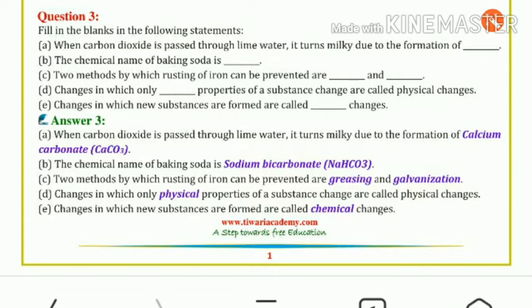The chemical name of baking soda is sodium bicarbonate (NaHCO3). Two methods by which rusting of iron can be prevented are greasing and galvanization. Changes in which only physical properties of a substance change are called physical changes. Changes in which new substances are formed are called chemical changes.